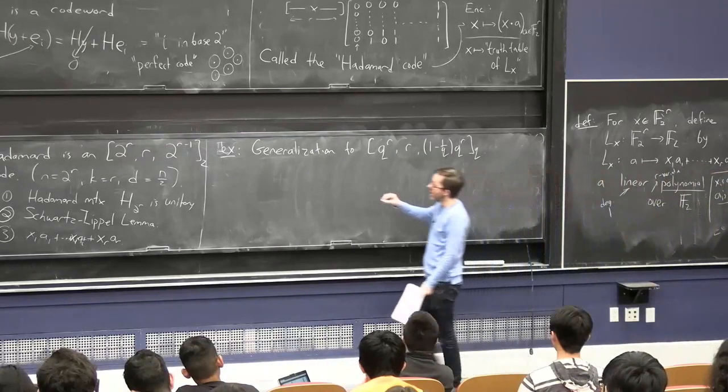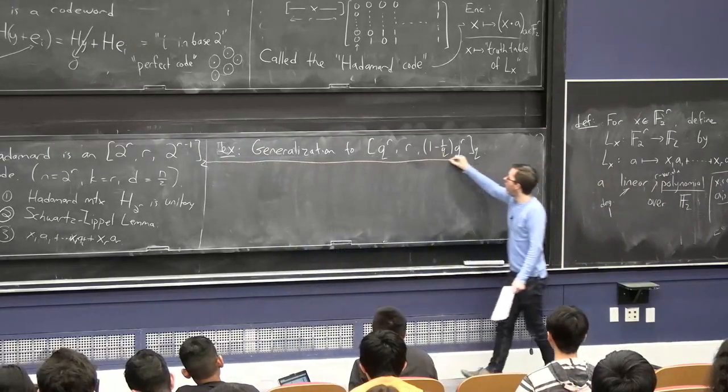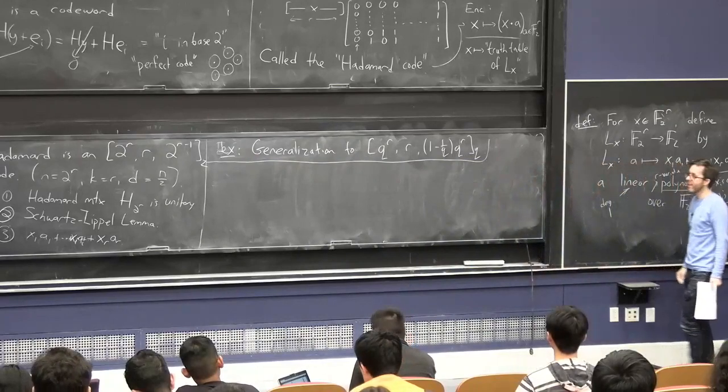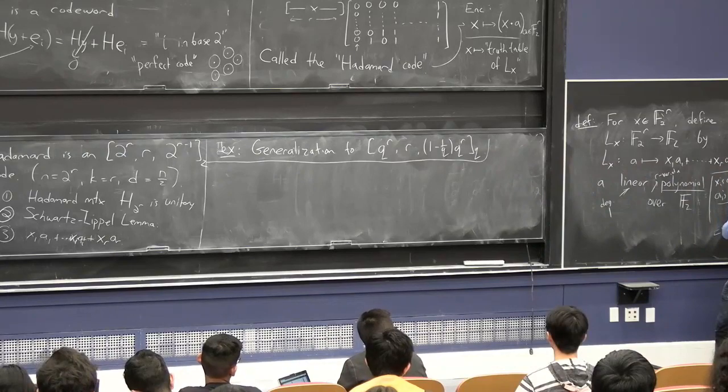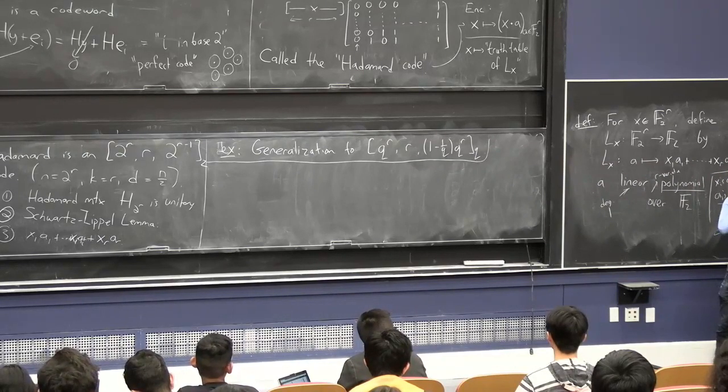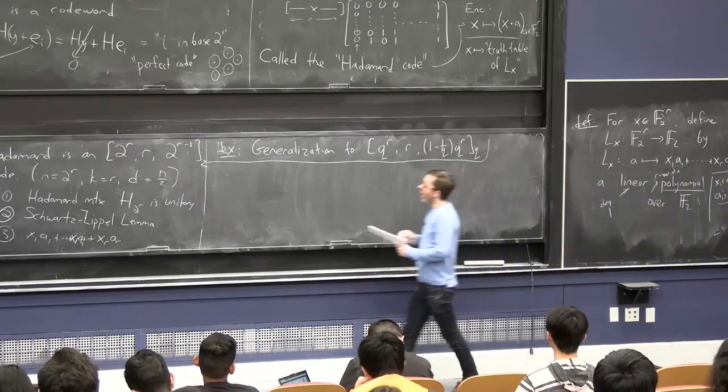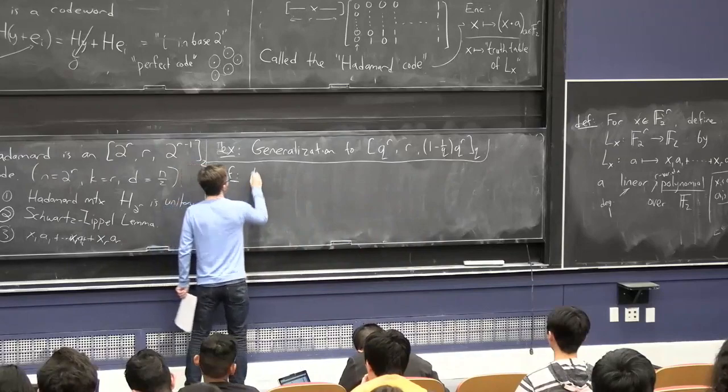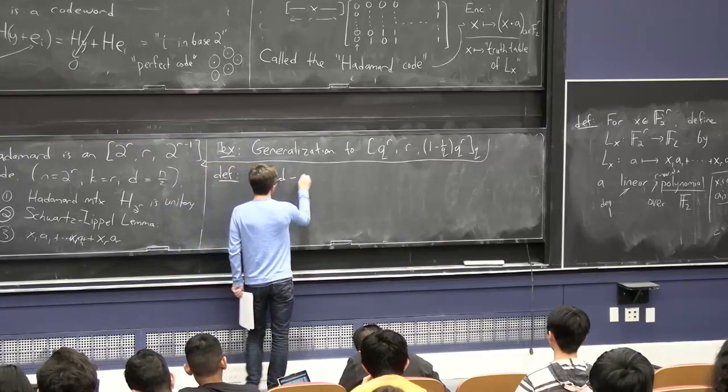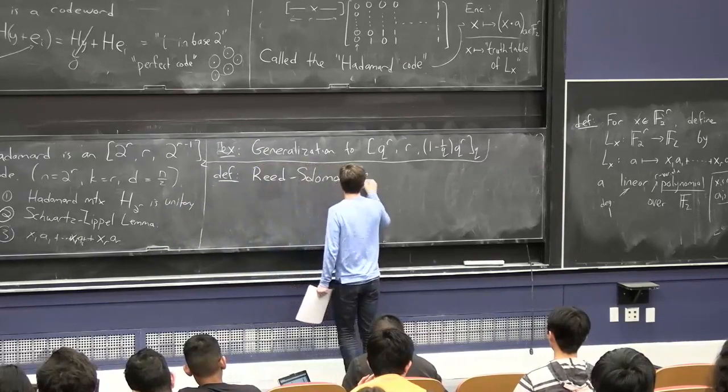Now we're going to see a code that has great rate and great distance, but it's still going to have a bad thing. And that bad thing is going to be the alphabet size. The alphabet size is going to be really huge. Nevertheless, these codes, which are called the Reed-Solomon codes, are really the ultimate great codes in practice.